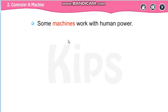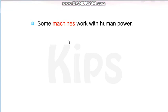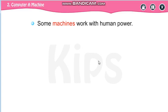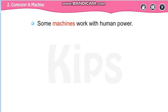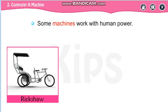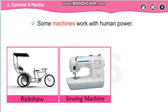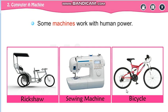Some machines work with human power — no electricity and no fuel is required, only human power. For example, a rickshaw or a bicycle: you apply power and the bicycle runs. Similarly, a sewing machine, which we use to stitch clothes, also works with human power.